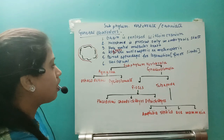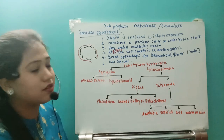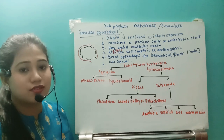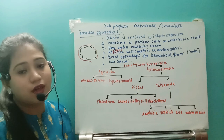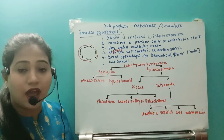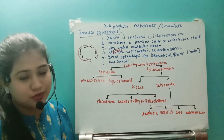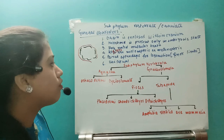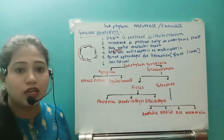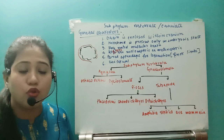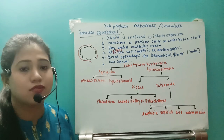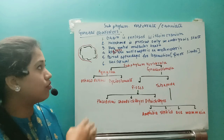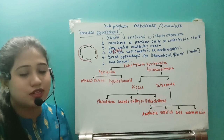For locomotion, vertebrates have paired appendages. In lower-grade organisms like fishes, they have paired fins; in higher-grade tetrapod vertebrates, they have legs and hands. Also, all organisms in subphylum Vertebrata are bisexual — no organism is hermaphrodite; all have separate male and separate female individuals.